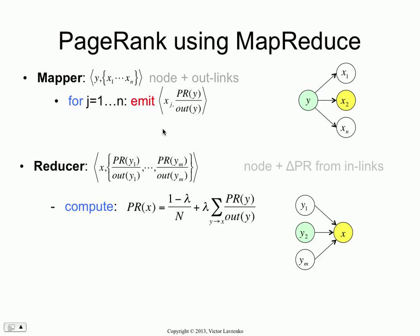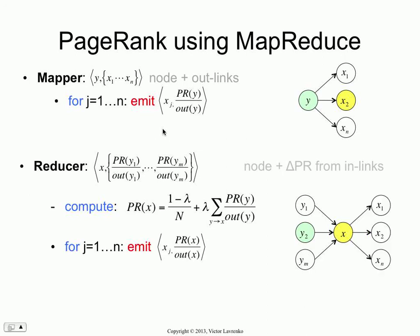What the reducer does first is compute the PageRank for node x using the equation from the previous slide. You walk over this array and add up those numbers, multiply by lambda and interpolate with (1 minus lambda) over n. That's going to be the current PageRank of node x. Then you need to continue the computation by taking this PageRank and sending it out to all the nodes that you point to — that's your new PageRank — and share it among the outgoing links, the neighbors that you point to.